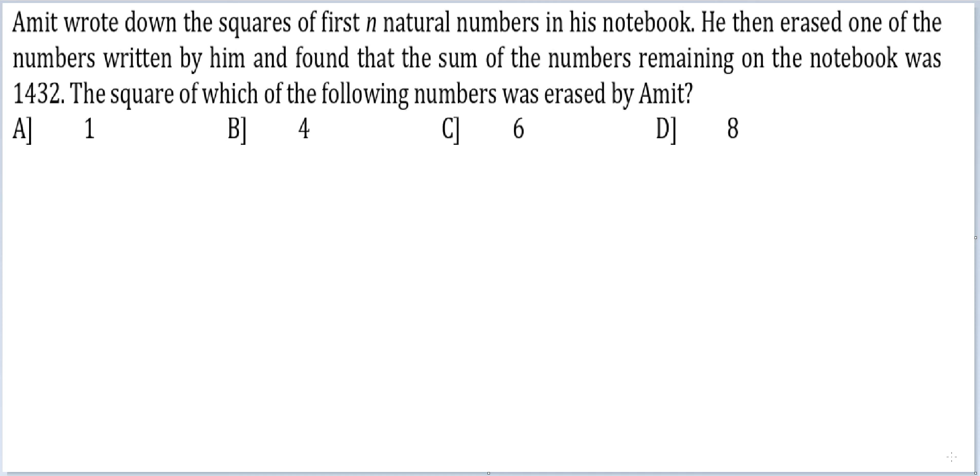Let's look at this question. Amit wrote down the squares of first n natural numbers in his notebook. He then erased one of the numbers written by him and found that the sum of the numbers remaining on the notebook was 1432. The square of which of the following numbers was erased by Amit?